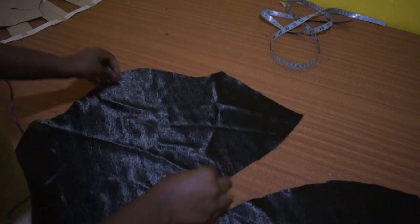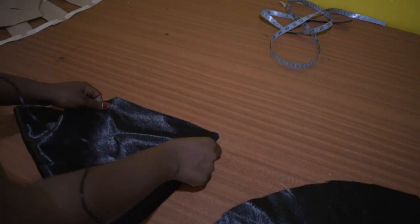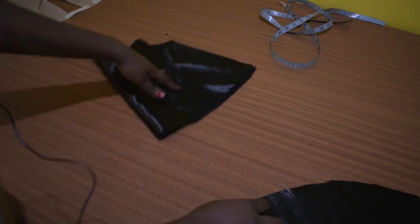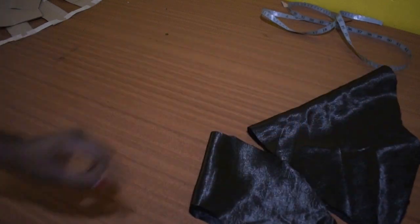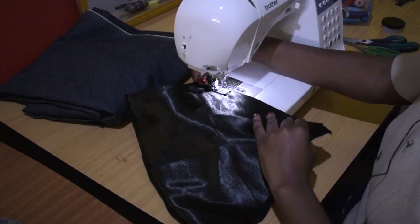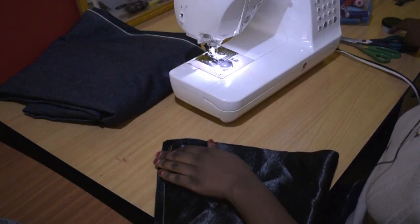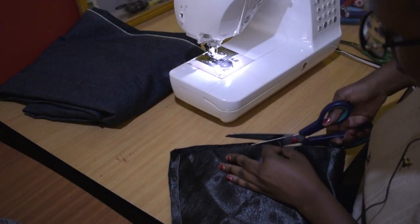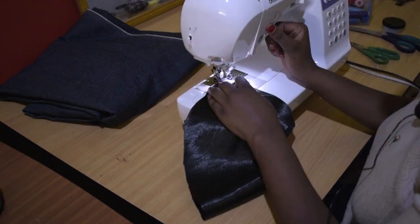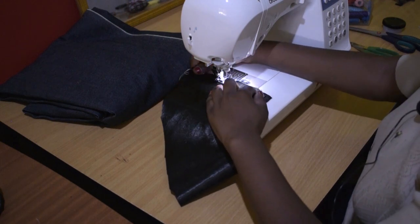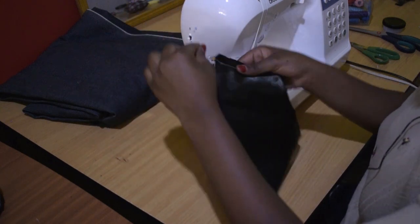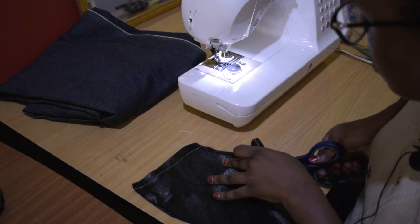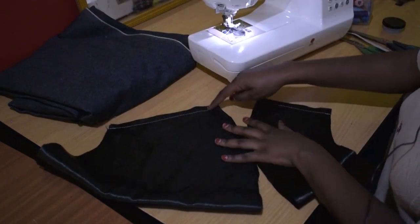So I'm first going to stitch this part at the sides like this, half an inch, the seam allowance I added, and then this part half an inch as well. Then you're going to join them so let's go to stitching. Even out this part since it's not even. I'm going to even out this as well. We'll start with this and this.